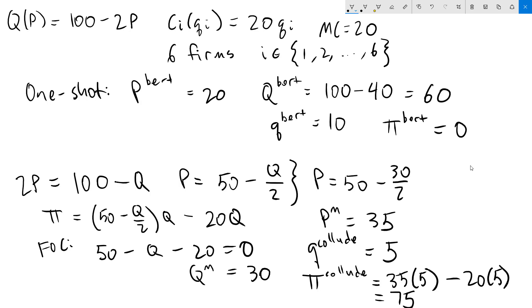As we expect, if the firms are able to collude, they're going to make more profit than they would if they were to compete. Of course, 75 is better than 0, so they prefer to collude. The problem with that in the one-shot setting is that they aren't able to. They always have an incentive to undercut, and that's going to drive that price all the way down to 20.